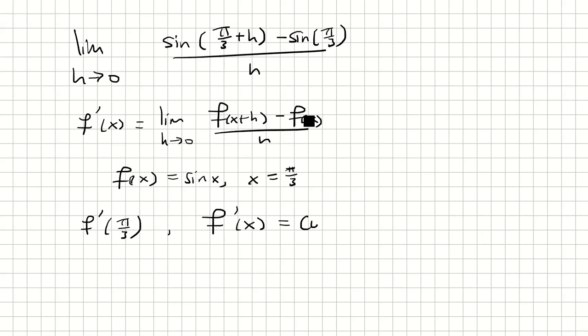The derivative of sine is cosine, and when we plug in x equals pi over 3, we want to solve for cosine of pi over 3, which is 1 half. And so that is the answer to the limit.